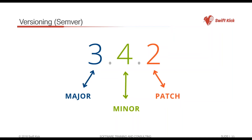It depends on the project and really the team responsible for versioning. The way it's supposed to work is that the major version only increments when you have significant or breaking changes to an application — going from 3.x to 4.x should represent a radical change. Bug fixes that drastically improve performance are held for the minor version.